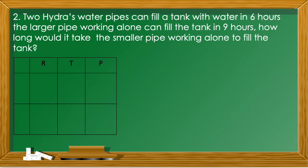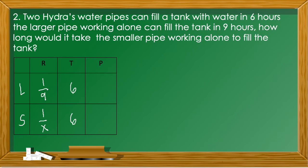The first row is for the larger pipe and the second row for the smaller pipe. The larger pipe working alone fills the tank in nine hours, so its rate is 1/9. The smaller pipe's rate is 1/x since it's unknown. Since both pipes together fill the tank in six hours, the time for both is 6.